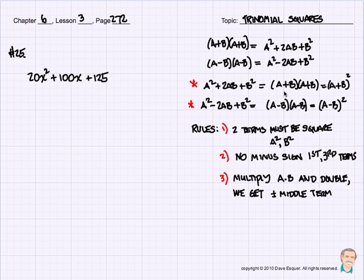In Chapter 6, Lesson 3, we're going the other way — we're factoring, going backwards. We're going to be using these two starred formulas: a squared plus 2ab plus b squared turns out to be just the quantity a plus b squared, and a squared minus 2ab plus b squared is the quantity a minus b squared. Just the opposite of what we were doing in Chapter 5.